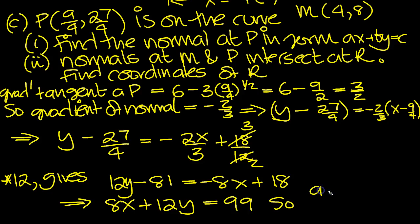So a is equal to 8, reading off the correspondences, b will equal 12, and c equals 99, so that's the first part done.